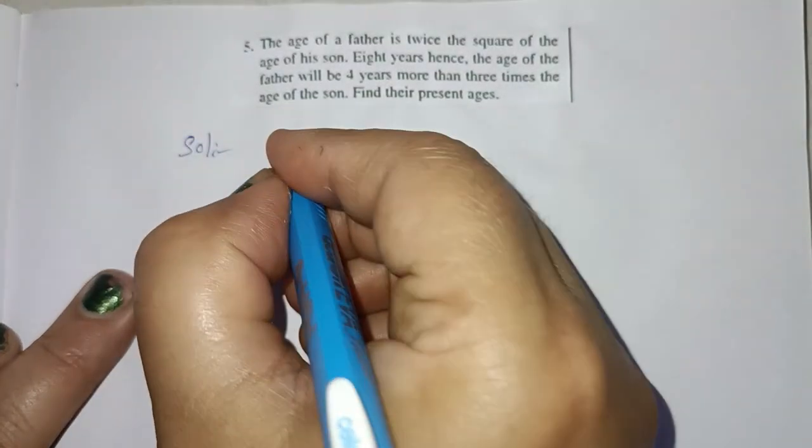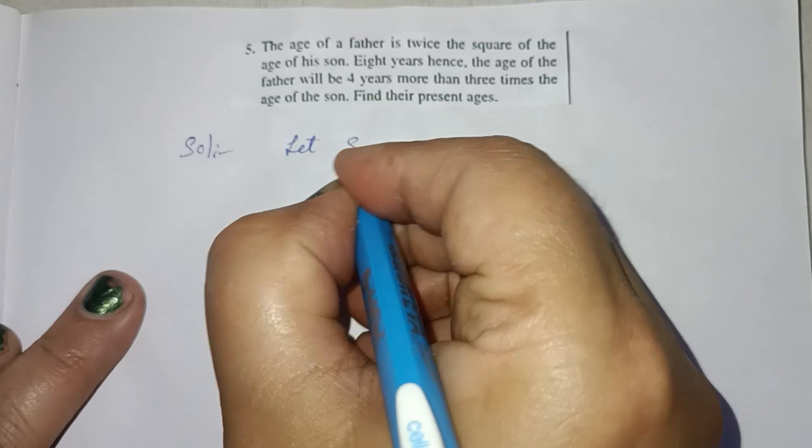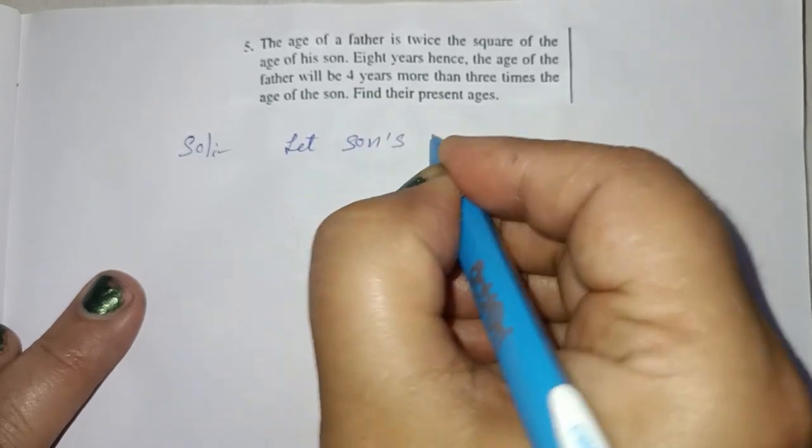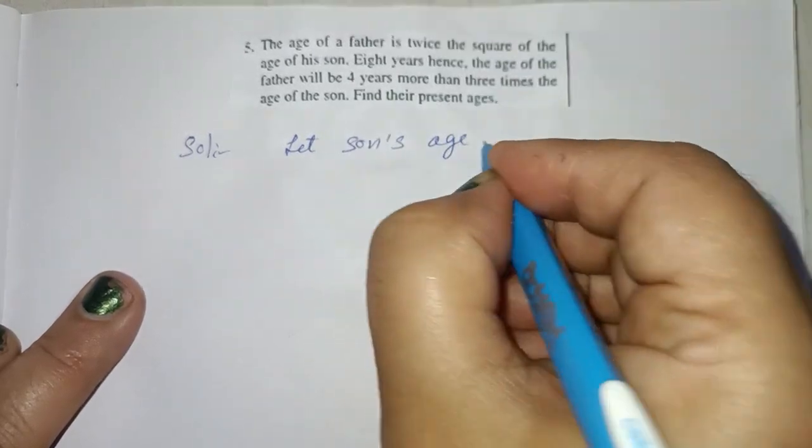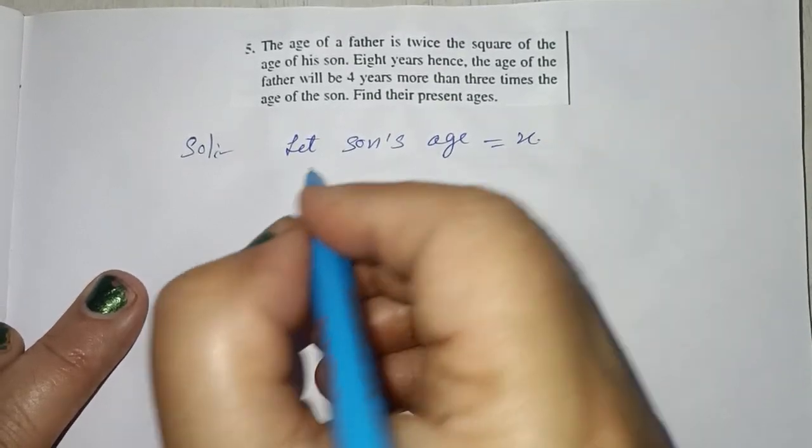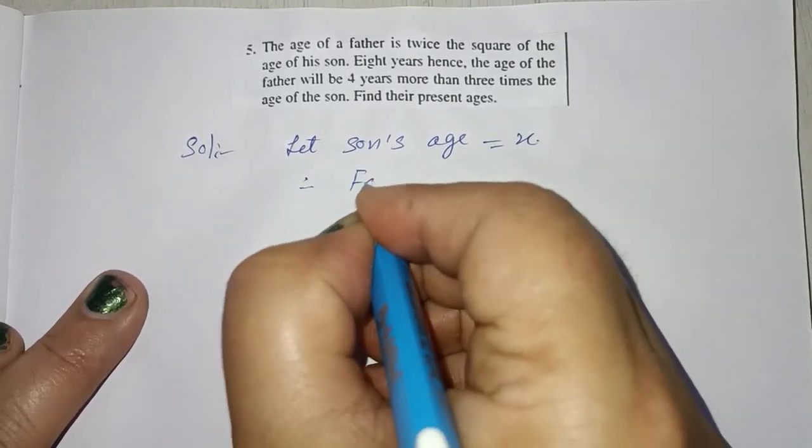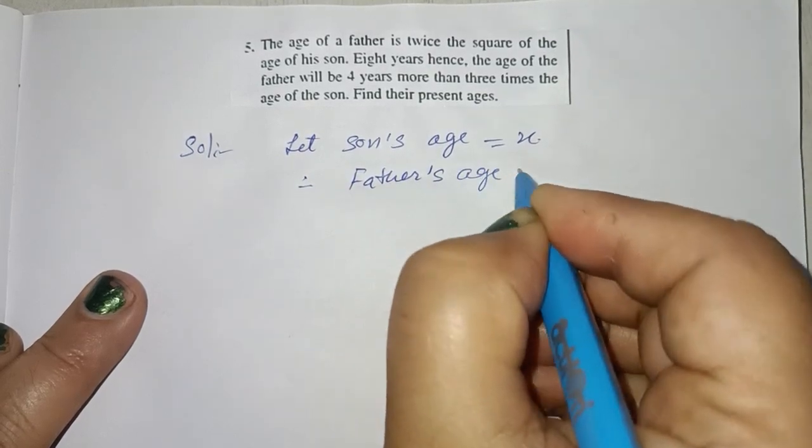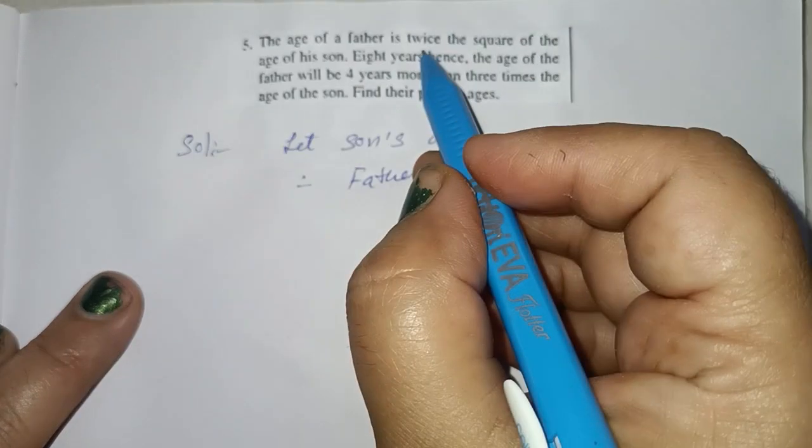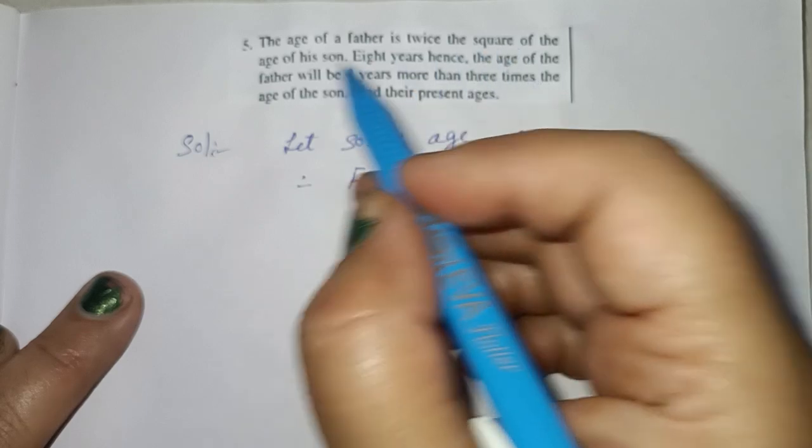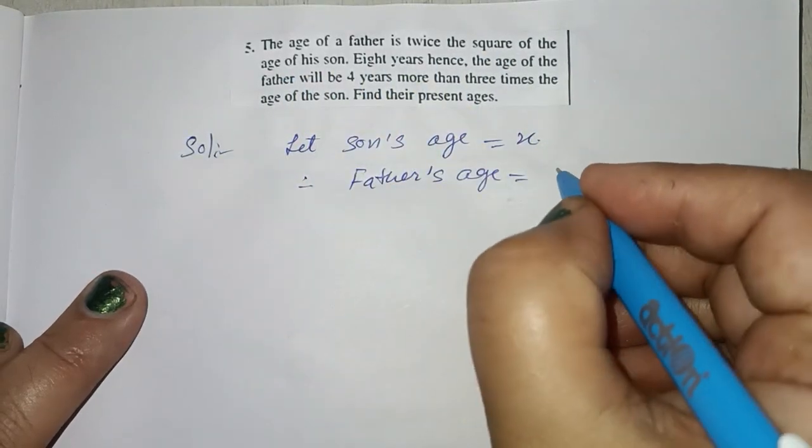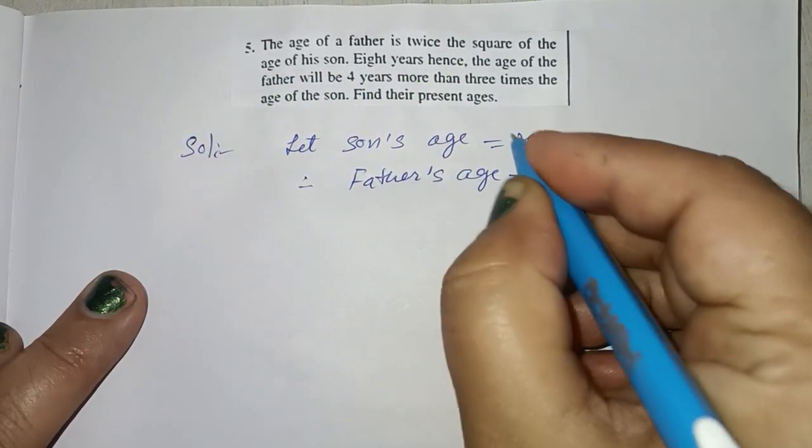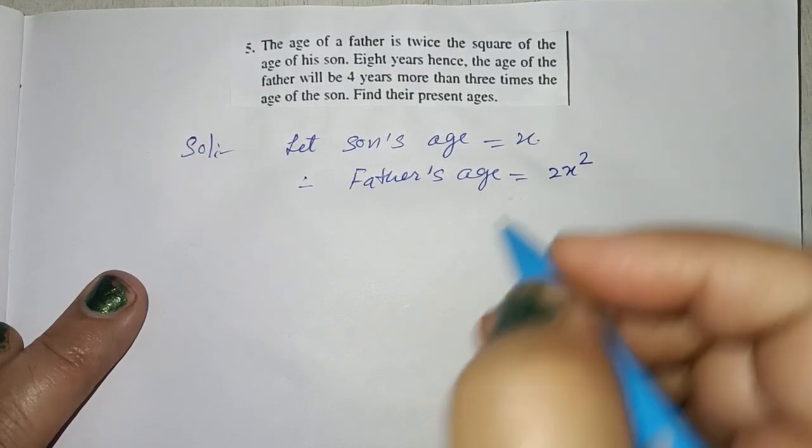Let son's age is equal to x. Therefore, father's age, twice the square of his son's age. This is twice, then square.